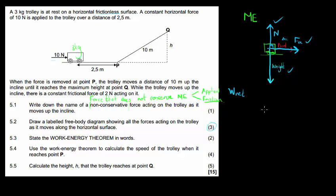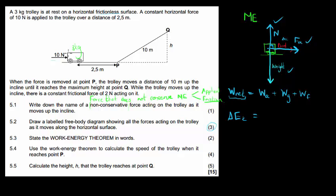State the work-energy theorem in words. That's just that the change in kinetic energy is equal to the net work done, or the net work done is equal to the change in kinetic energy. Use the work-energy theorem to calculate the speed at which the trolley reaches point B. The formula is: work of the applied force plus work of gravity plus work of friction equals the net work done. The work-energy theorem states that the net work done equals the change in kinetic energy. The work of gravity is perpendicular to the direction of displacement, so gravity is not doing any work. Friction is zero on the horizontal surface.